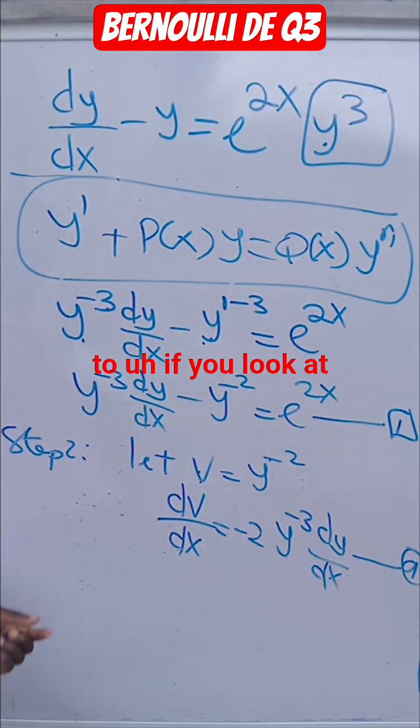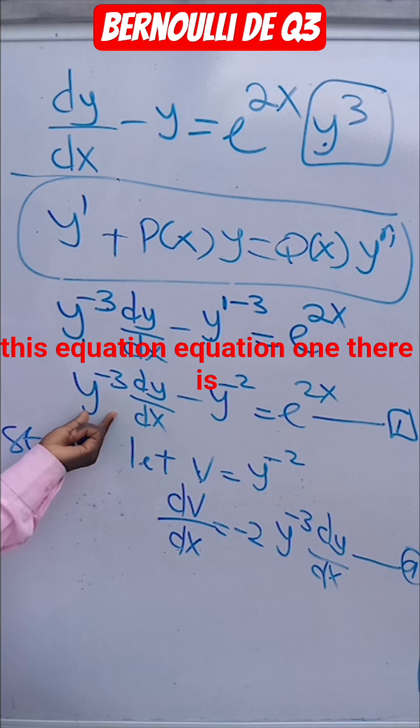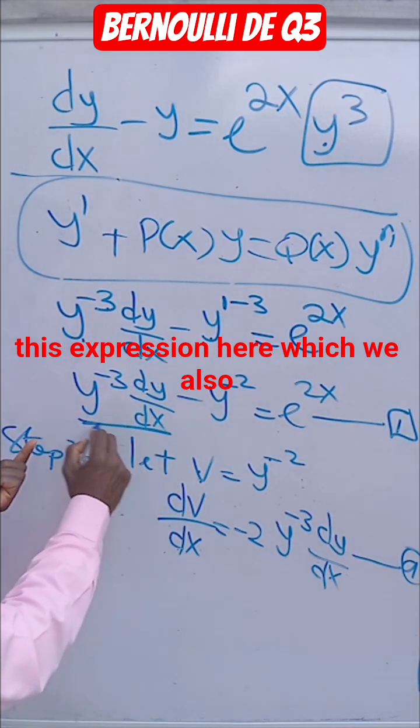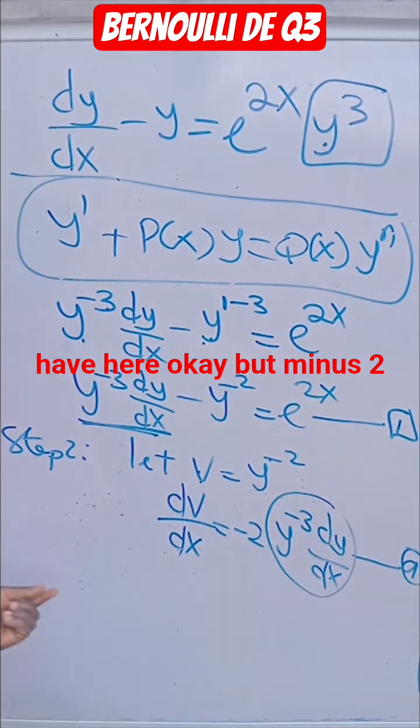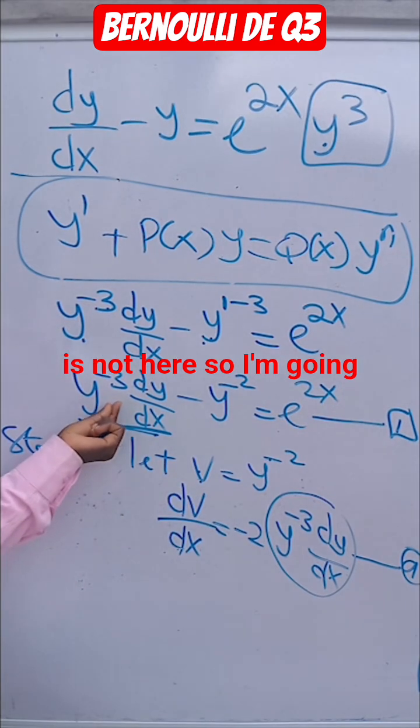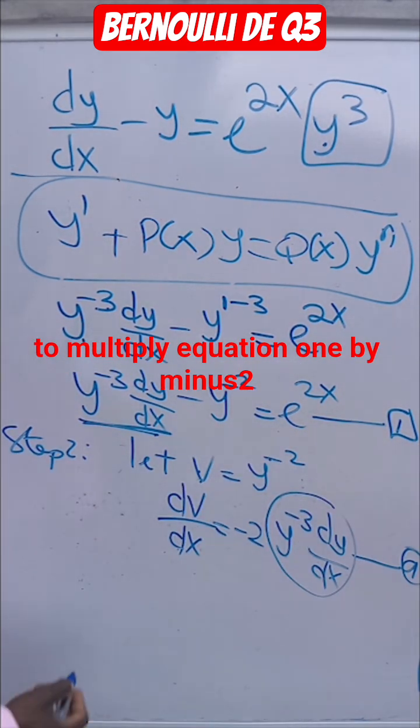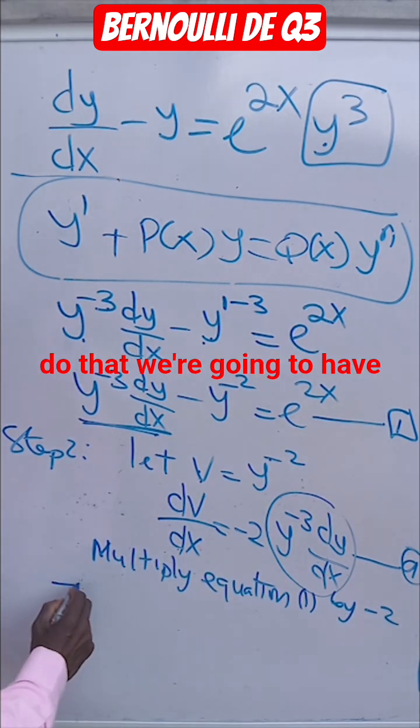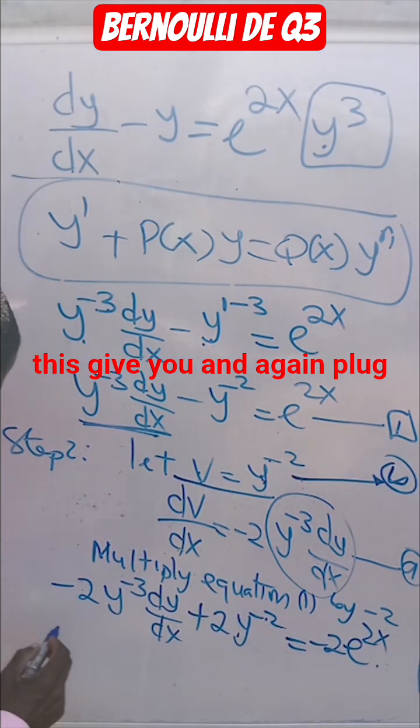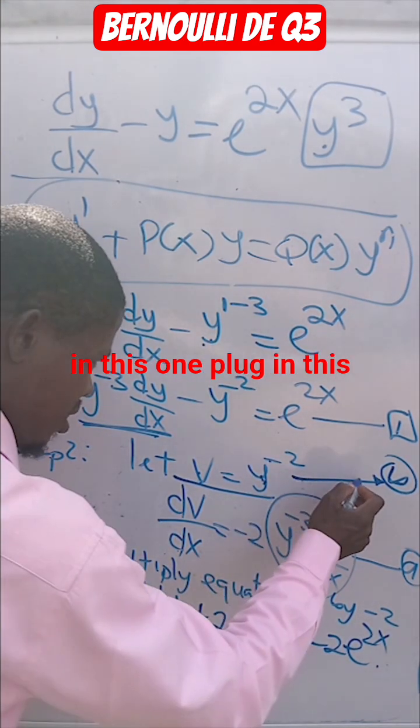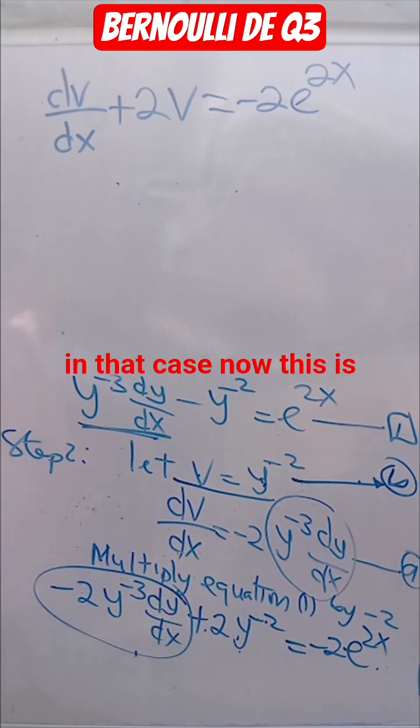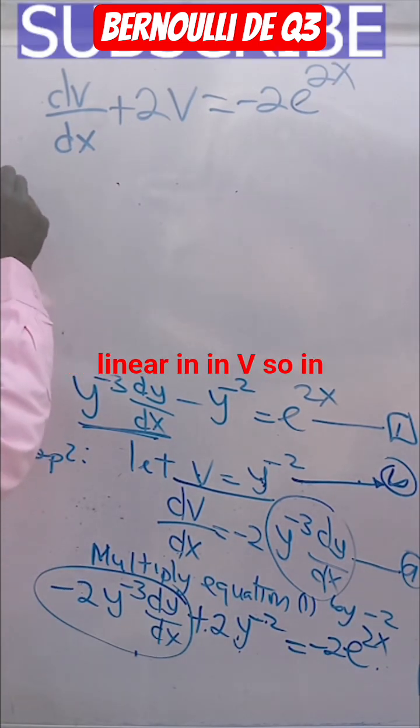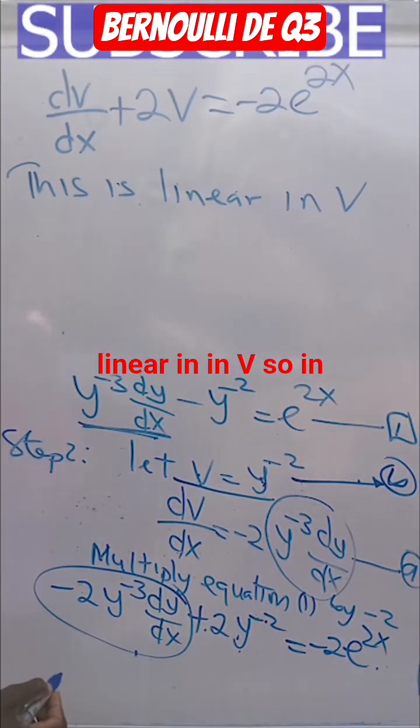If you look at this equation, equation 1, there is this expression here which we also have here, but minus 2 is not here. So I'm going to multiply equation 1 by minus 2. Do that, we are going to have this, and again plug in this one to this particular equation. So in that case now this is linear in V.